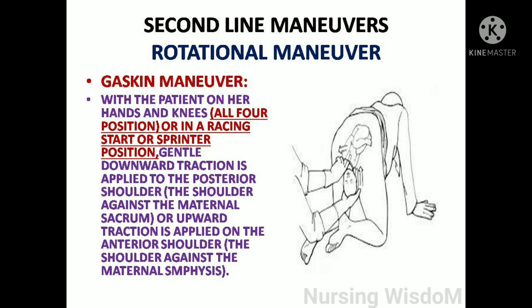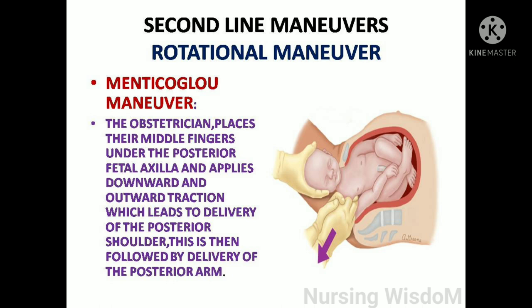The Gaskin maneuver is performed with the patient on all fours or in a racing/sprinter position. Gentle downward traction is applied to the posterior shoulder (the shoulder against the maternal sacrum), and upward traction is applied to the anterior shoulder (the shoulder against the maternal symphysis). This aids in delivery of the fetus.